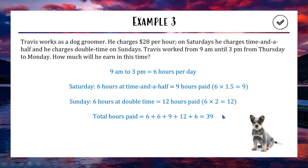Multiplying 39 hours by Travis's hourly wage of $28 gives us a total weekly pay of $1,092. Not too bad for five days' work.